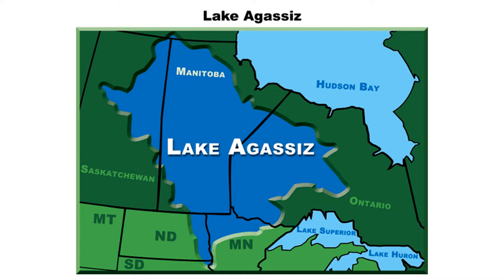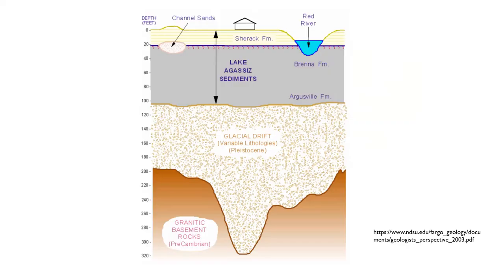The current river channel flows through the middle of Lake Agassiz. This provides two conditions related to how the Red River functions. First, it is a fairly young river, not more than 9,000 years old, so it is still in the process of defining its floodplain.